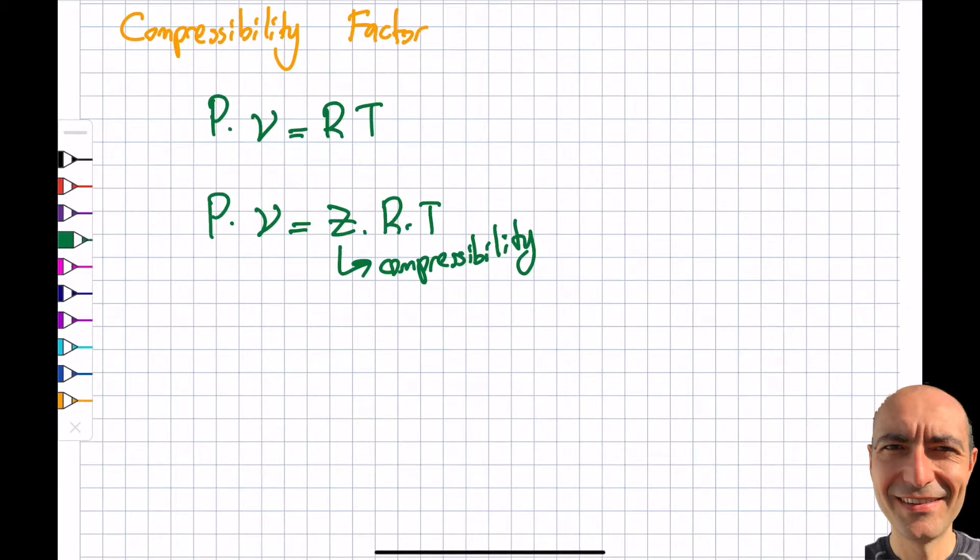Obviously you can see from this relationship that if my Z is equal to one, I get myself the ideal gas law. So the goal is to find what this correction factor or compressibility factor will do. As you will find soon, the Z is a function of the pressure, temperature, as well as the gas itself.